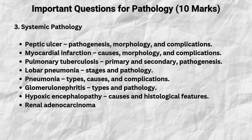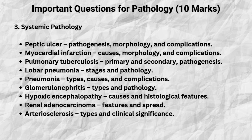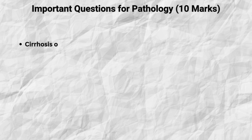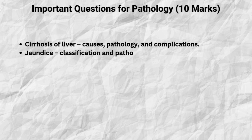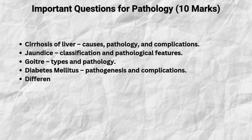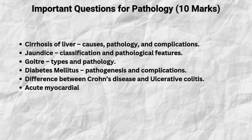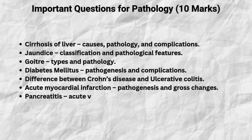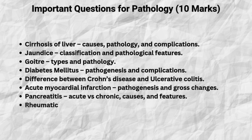Hypoxic encephalopathy — causes and features. Renal adenocarcinoma — features and spread. Arteriosclerosis — types and clinical relevance. Cirrhosis of liver — causes and complications. Jaundice — classification and features. Goitre — types and pathology. Diabetes mellitus — pathogenesis and complications. Difference between Crohn's disease and ulcerative colitis. Gross changes in acute myocardial infarction. Pancreatitis — acute versus chronic. Rheumatic heart disease — pathogenesis and complications.